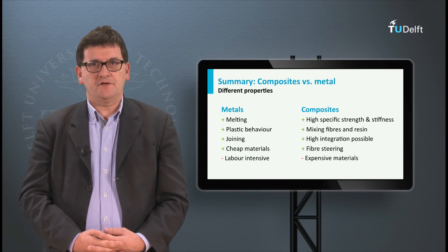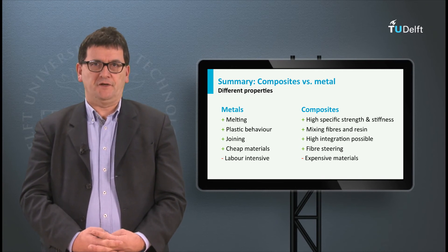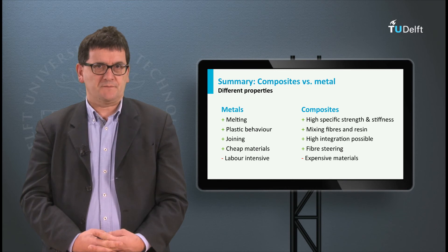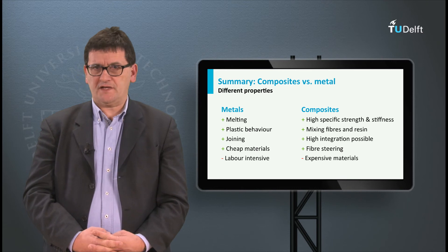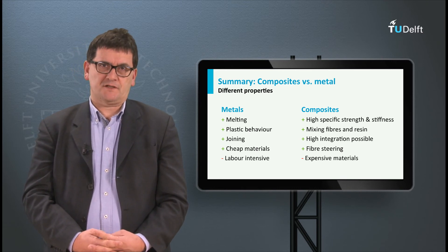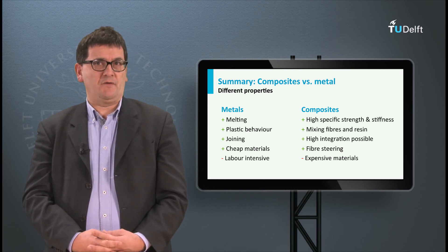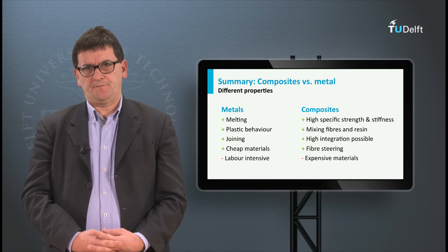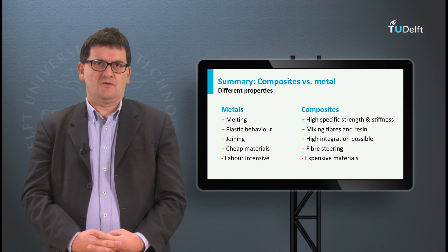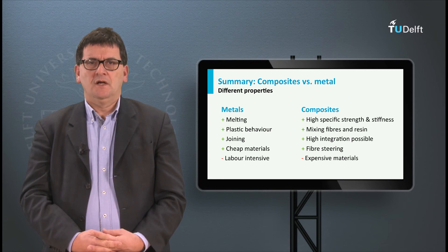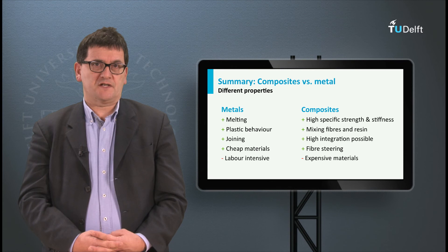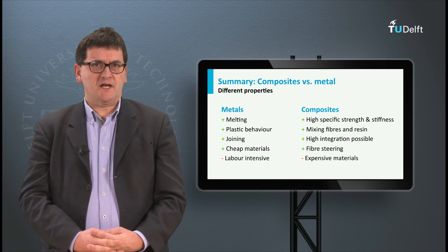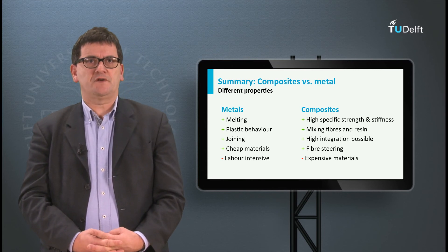The two previous slides show the differences in the manufacturing of products which are made of different materials. Some of the material properties we have seen before influence the choice of the most appropriate manufacturing process. For metals, they can be melted, they show plastic behaviour, are cheap, can be easily processed — for example by machining — and can also be joined easily by rivets or bolts. For composites, the fibres and resins need to be impregnated or mixed, uncured materials are very malleable, and continuous fibres are often used to steer the process. Another typical difference is that metal structures are often assembled from many components, whereas composite structures have a high degree of integration. Assembly can be very labour intensive, but on the other hand composite materials can be rather expensive themselves.